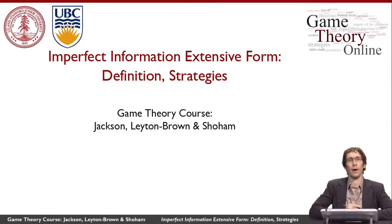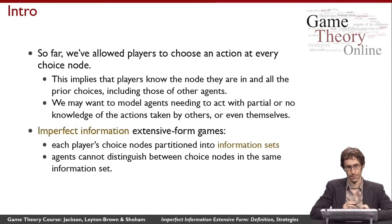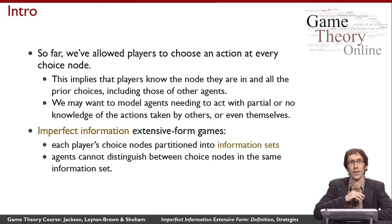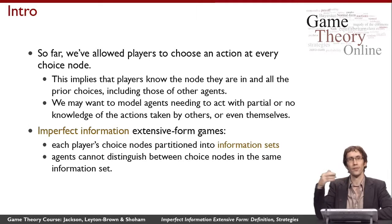In this video, I'm going to tell you about how to formally define the imperfect information extensive form and how to reason about strategies in these games. In the perfect information extensive form, we have a player taking action at every single choice node in the game. A consequence of that definition is that players know what node they're in at all times, meaning they know the whole history of all moves that have happened before.